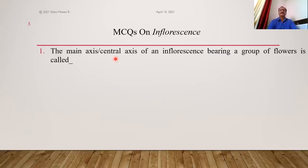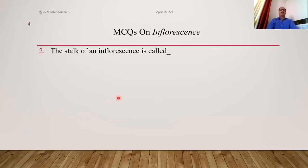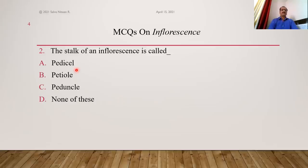First question: the main axis or central axis of an inflorescence bearing a group of flowers is called what? Pedicel is the stock of flower; petiole is the stock of leaf; rachis or peduncle is the main axis of inflorescence. The upper part on which flowers are directly present is the rachis; the lower part acting as the stock of inflorescence is the peduncle. The stock of inflorescence is called the peduncle, so option C is the answer.